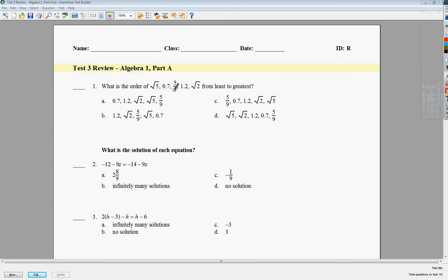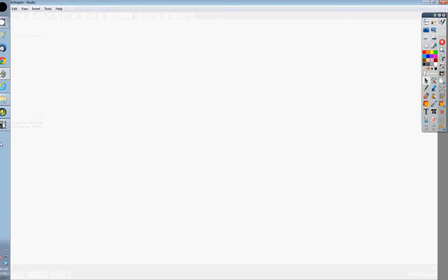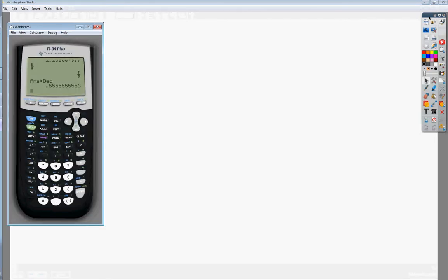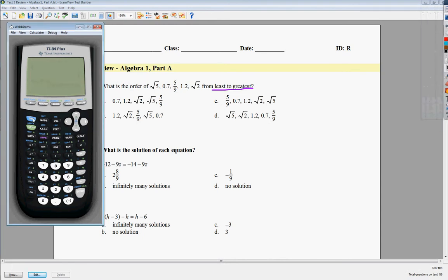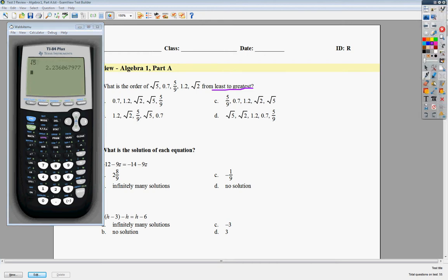Anyway, this is what is the order of square root of 5, 0.7, 5 over 9, 1.2, and square root of 2, from least to greatest. It's important to recognize what they're asking you, because if it's greatest to least, your answer would be wrong if you did least to greatest. The next thing I need to do is look at square roots. I'm going to pop up a calculator here really quickly. If I was going to do square root of 5, I get 2.23, so I'm going to go ahead and change that into 2.2.